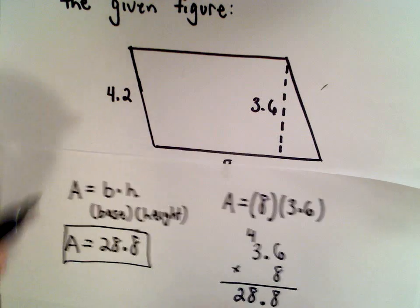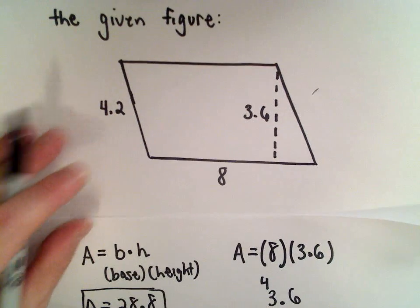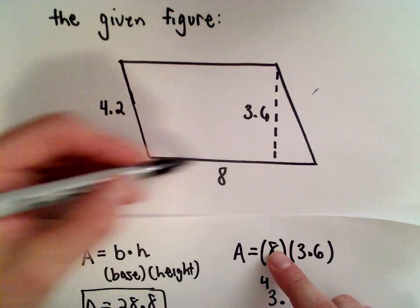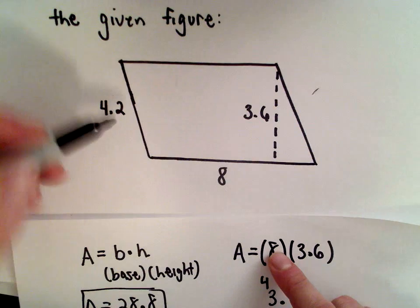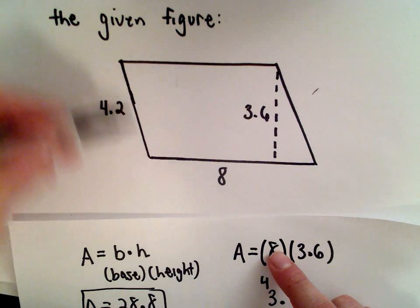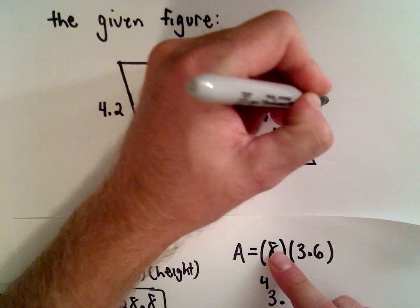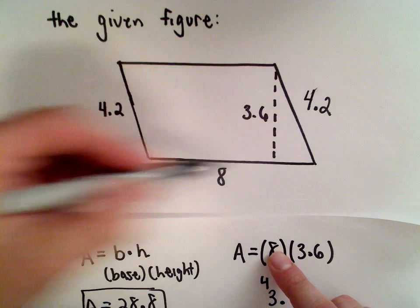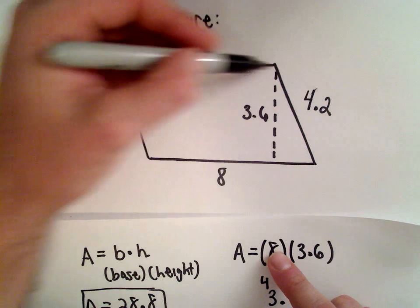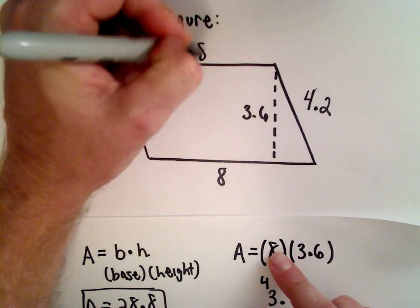The other part is the perimeter. The perimeter is just the distance around. Since we have a parallelogram, the left side has a length of 4.2, which means the right side is also 4.2. The base has a length of 8, so the top part is also going to have a length of 8.